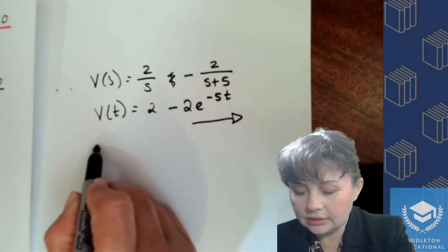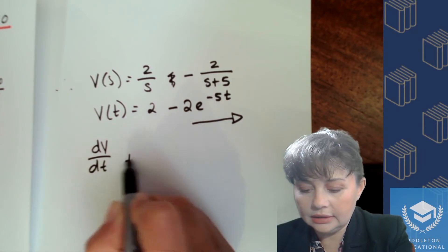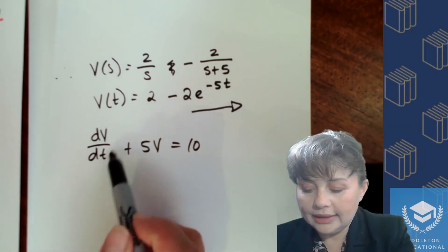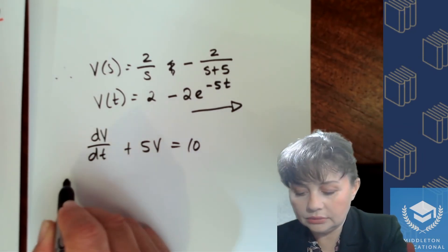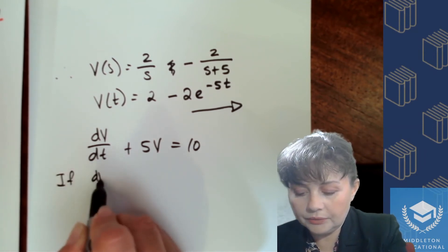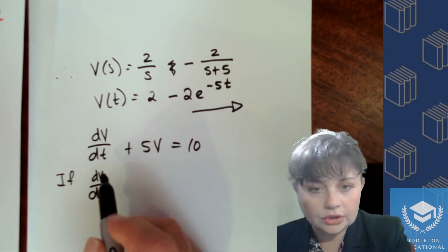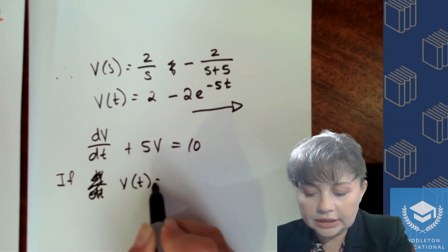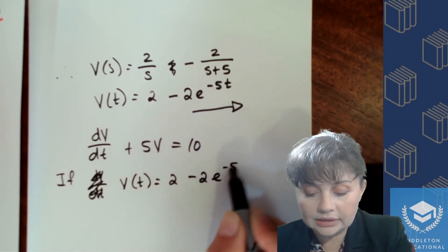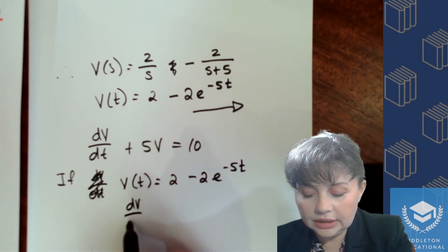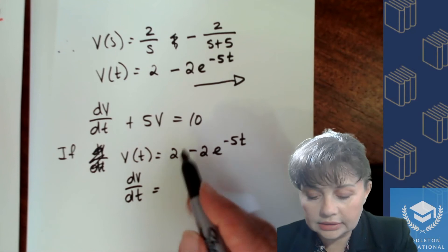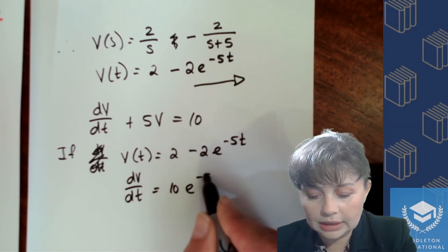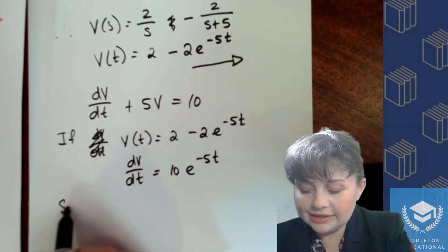My differential equation is dv/dt + 5v = 10. So v is v(t), but what I need is dv/dt. If v(t) = 2 - 2e^(-5t), then dv/dt is going to be zero from the constant, and from the exponential term it's going to be -5 times -2, so it's 10e^(-5t).